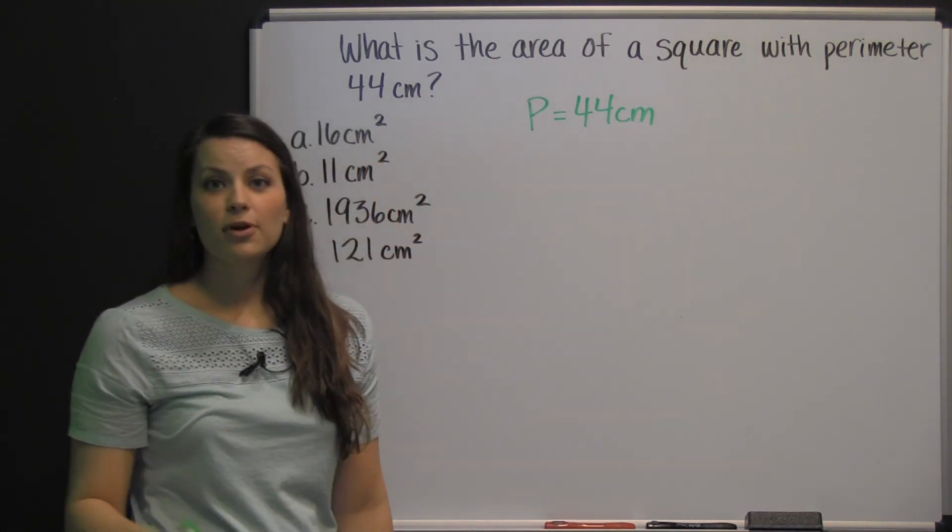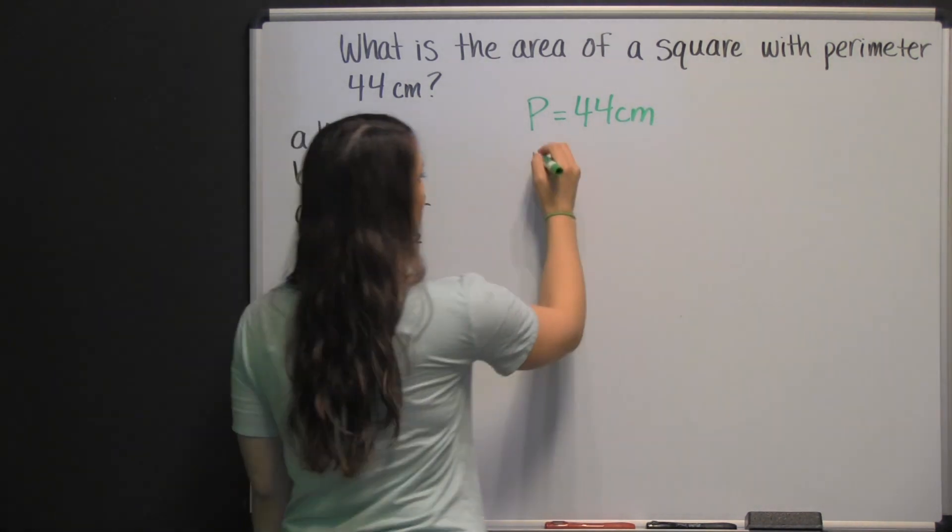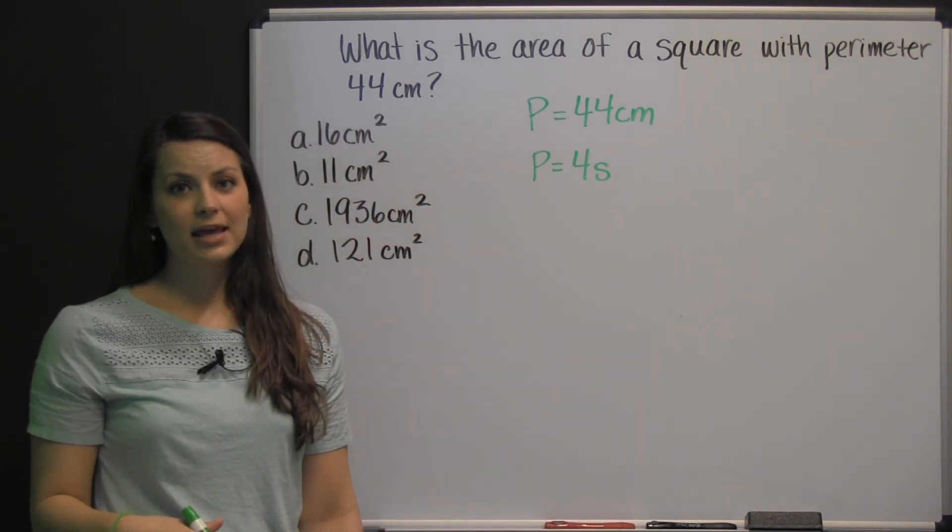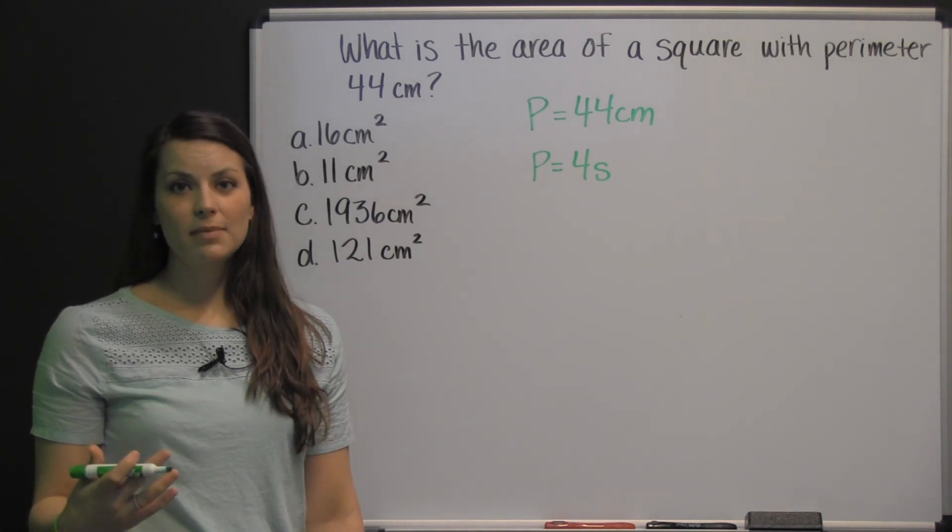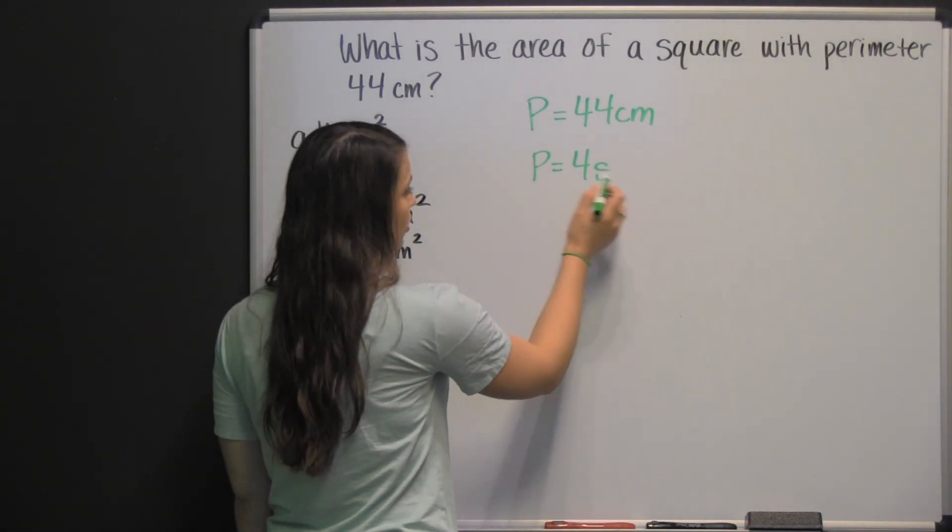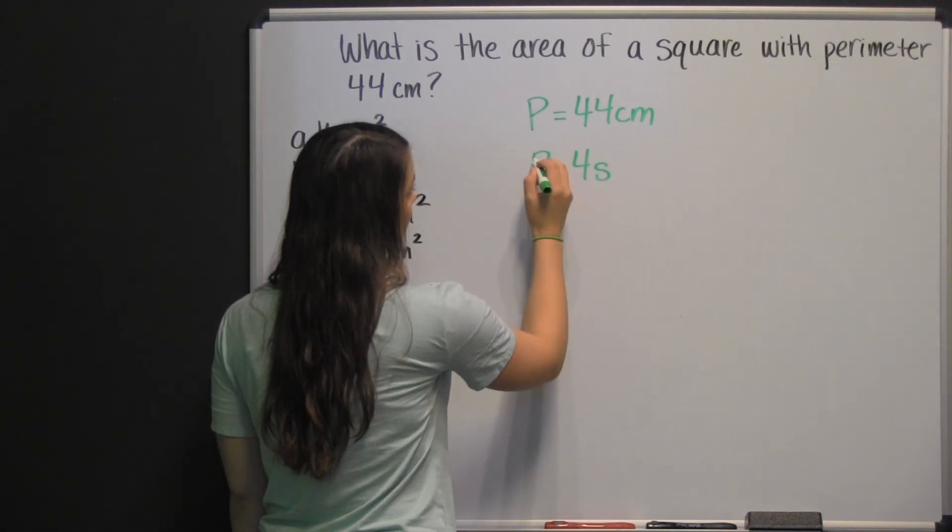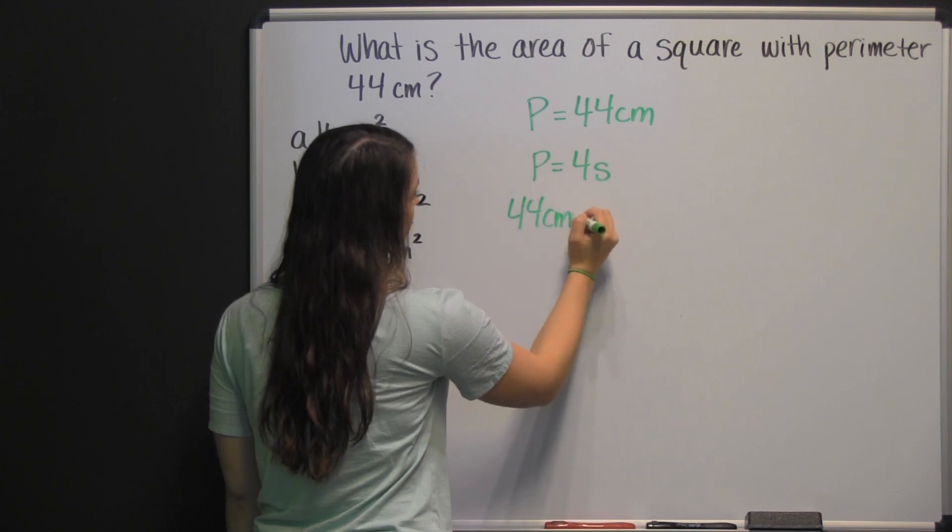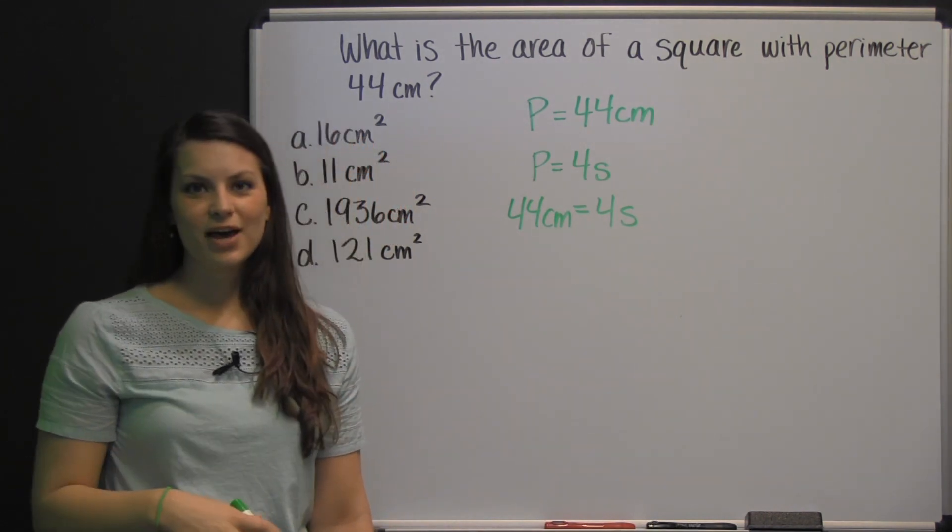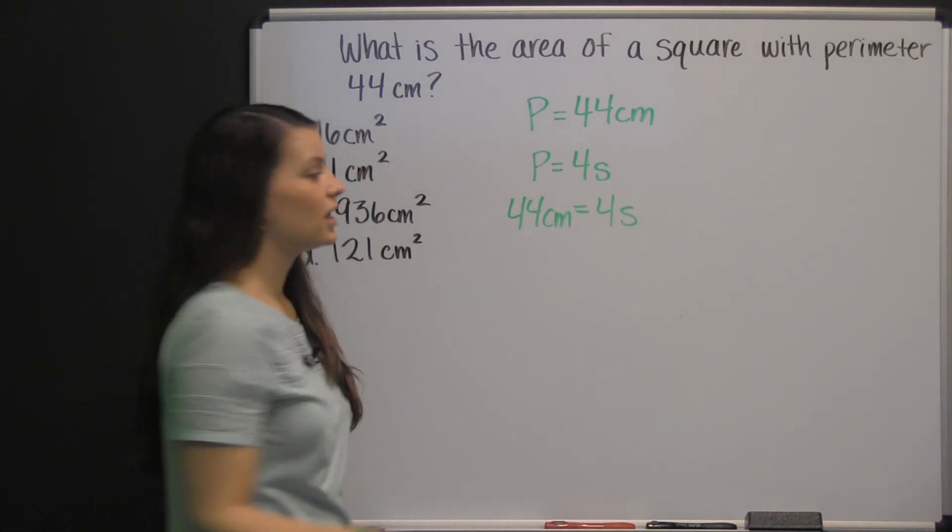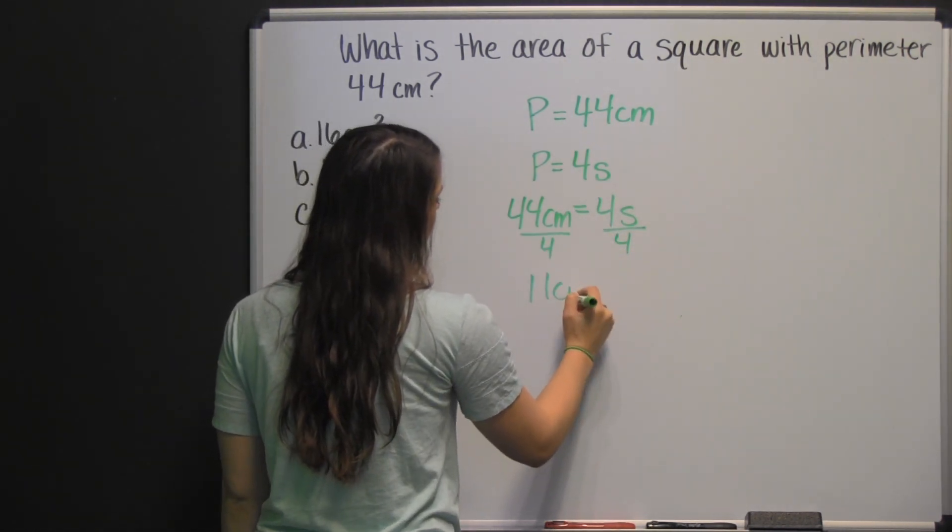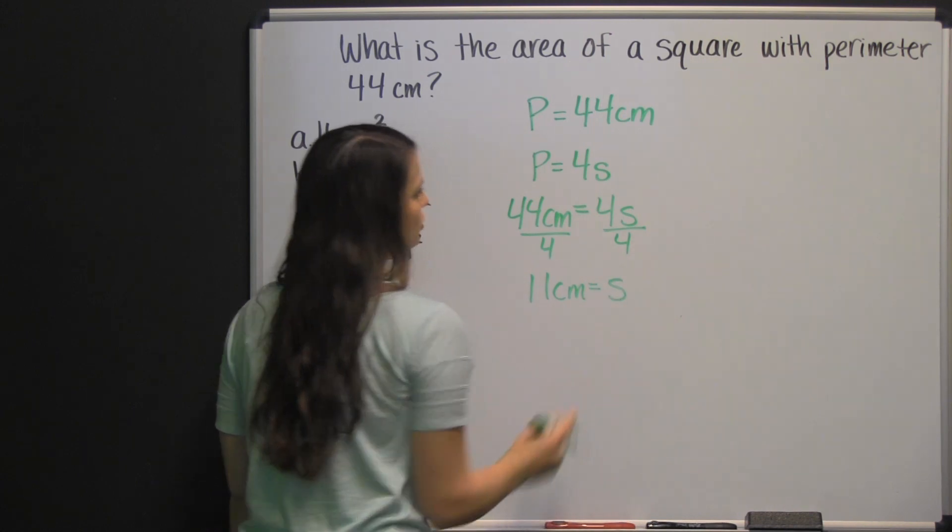The formula for the perimeter of a square is P equals 4S. Since every side is the same length, and the perimeter of a shape is simply the distance around the entire shape, it would be those four sides. The perimeter is 44, so we substitute 44 centimeters for P equals 4 times S. We can solve for the length of the side by dividing both sides by four. So, 11 centimeters is the length of each side of the square.